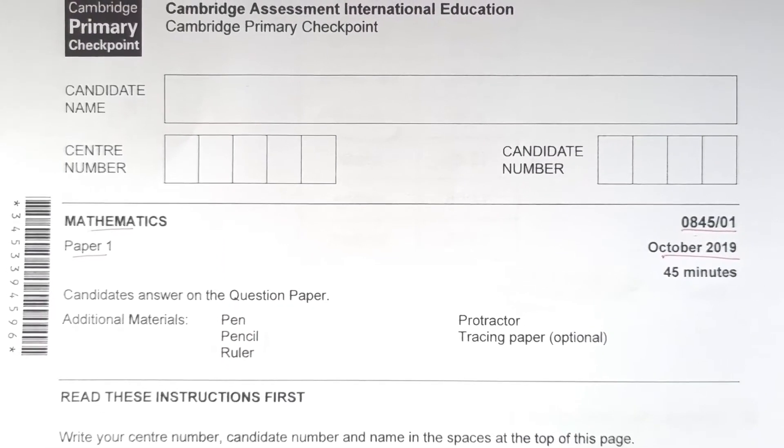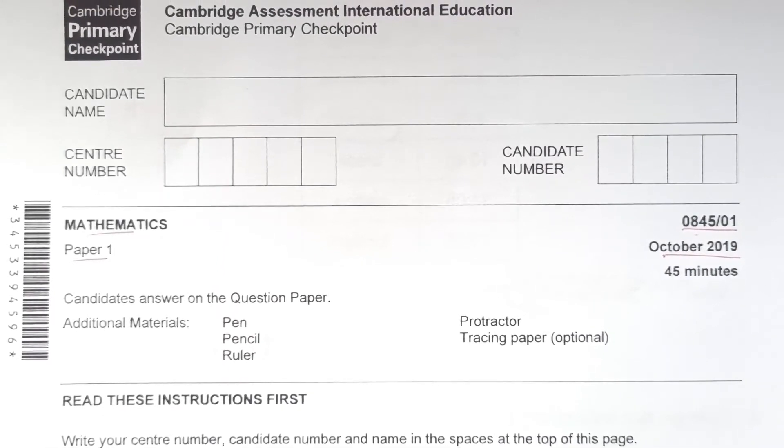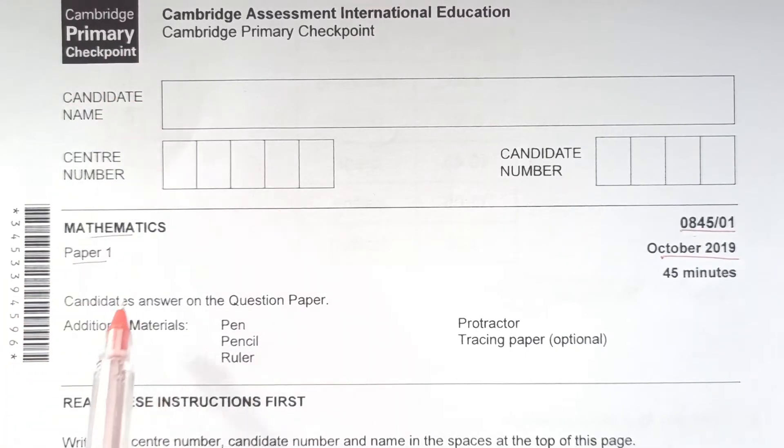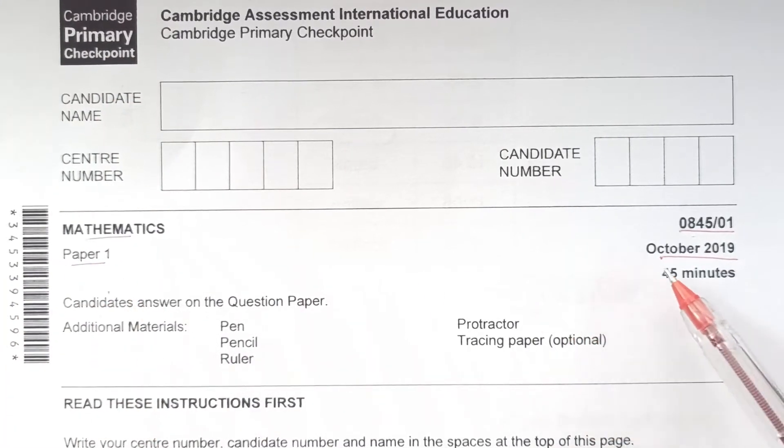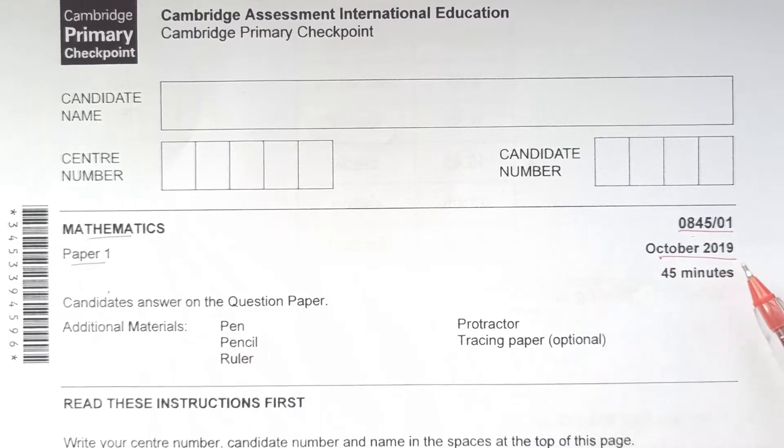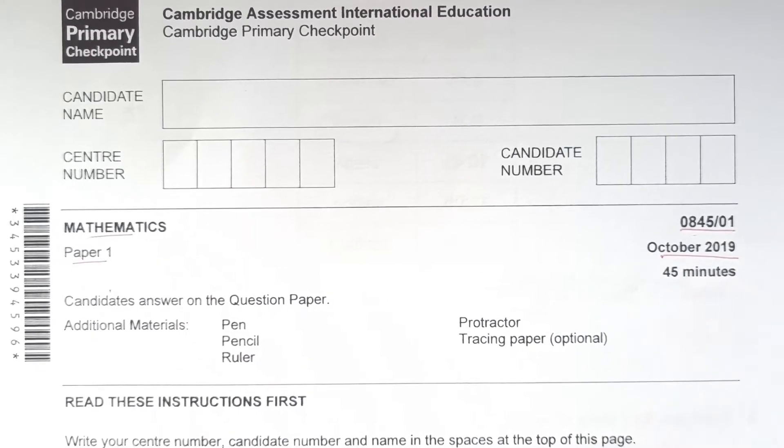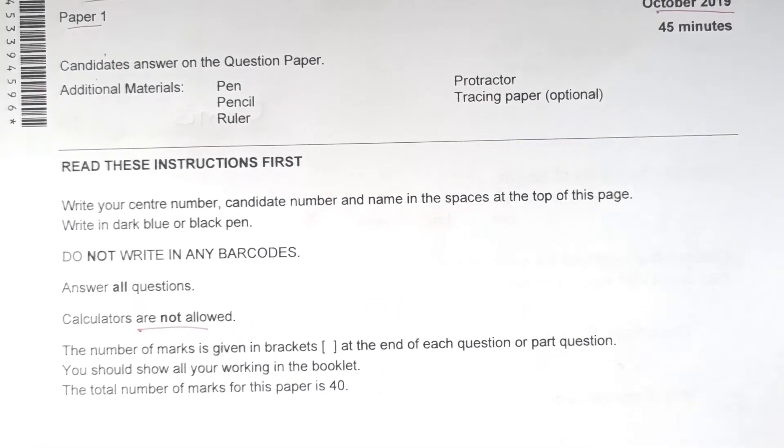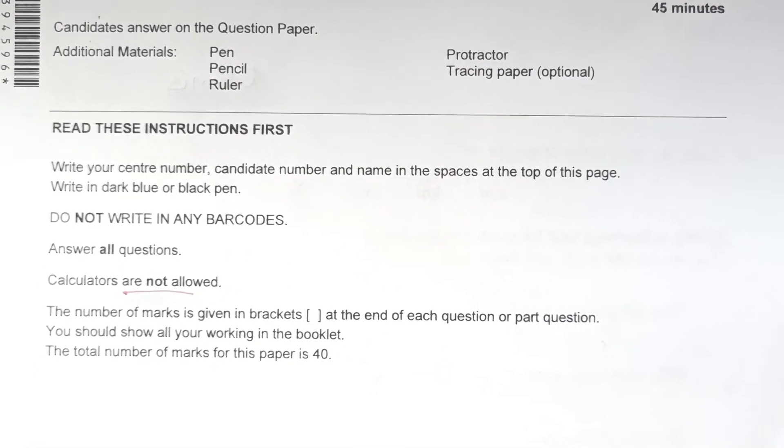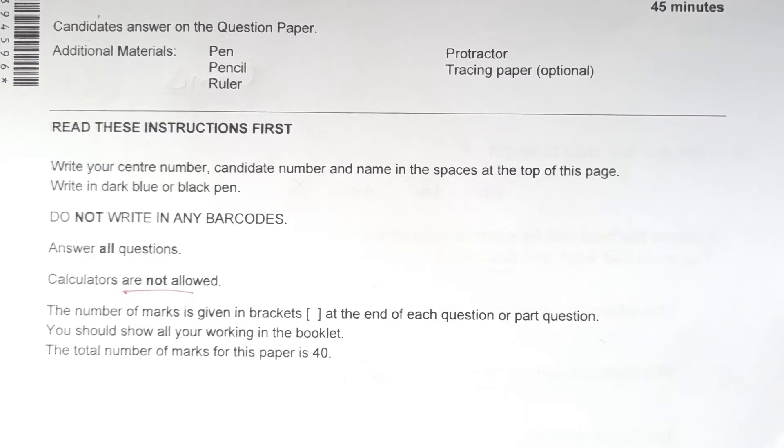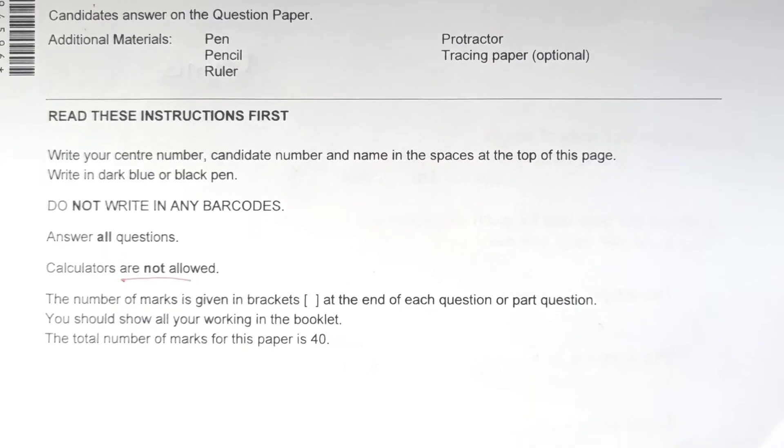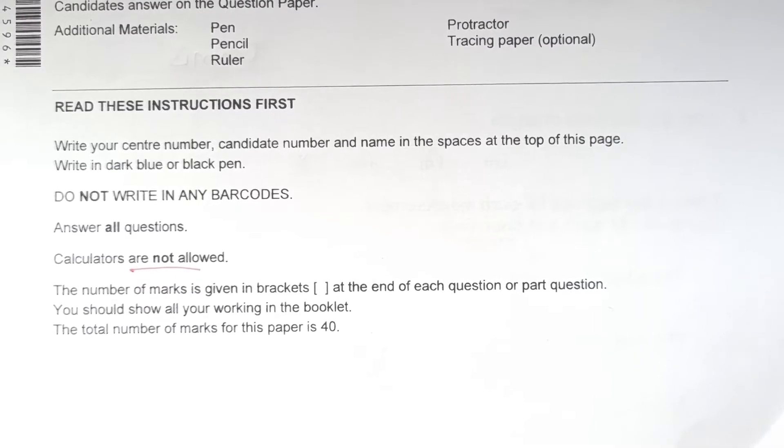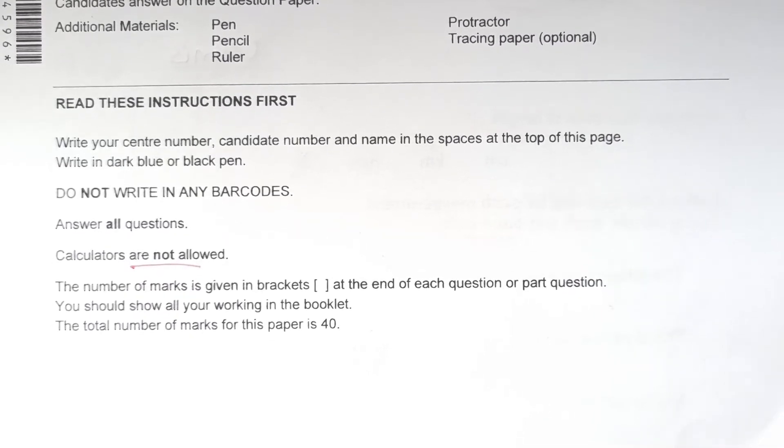Hello guys, welcome back to my channel. This is second part of Cambridge Primary Checkpoint Mathematics Paper 1 of October 2019. Time to finish this is 45 minutes. In the first video we completed questions 1 to 16. We will do the remaining questions in this video. If you have not subscribed to my channel, please do so. And if you have already subscribed, thank you so much guys. Let's start.